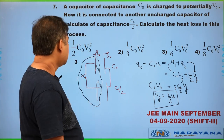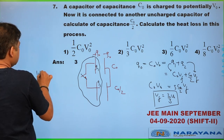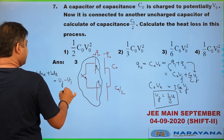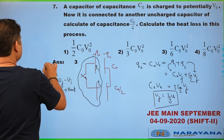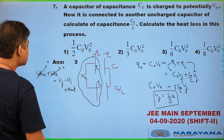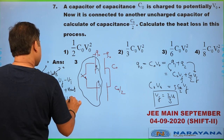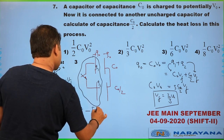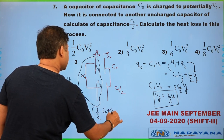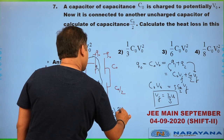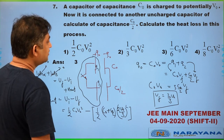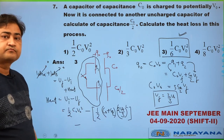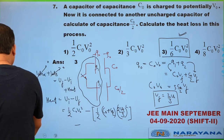For energy, using work-energy theorem: there is no external agency or battery, so heat released equals initial energy minus final energy. Initial energy = (1/2)C₀V₀². Final energy = (1/2)(C₀ + C₀/2)(2V₀/3)² shared across both capacitors. On performing this simple calculation, you get option 3 as the answer. This is again a very simple standard question in the capacitors chapter.